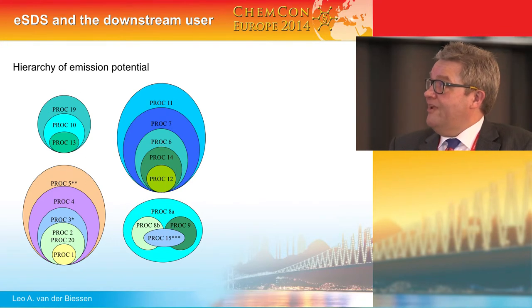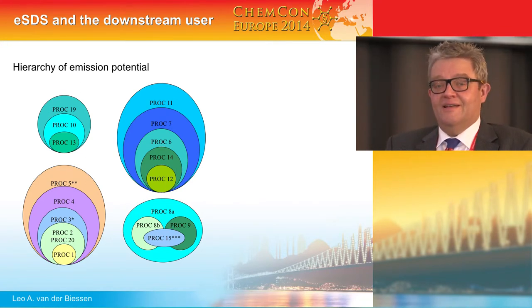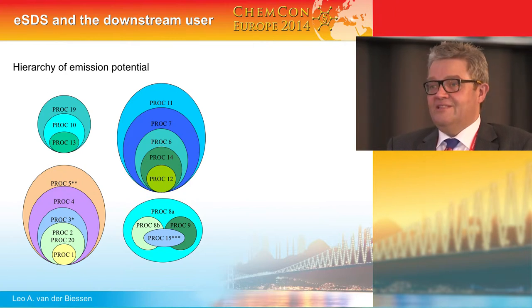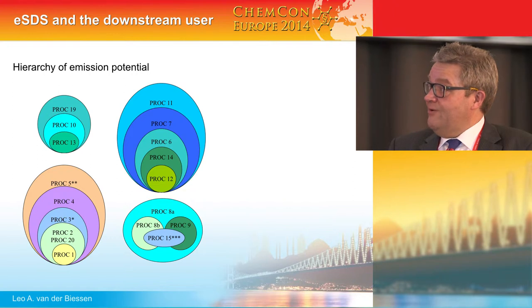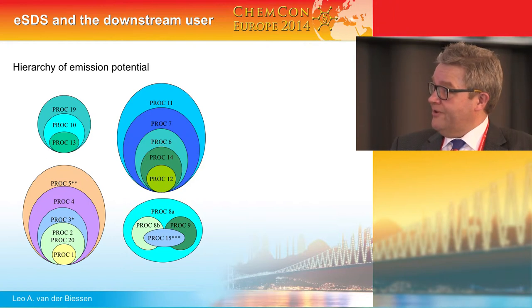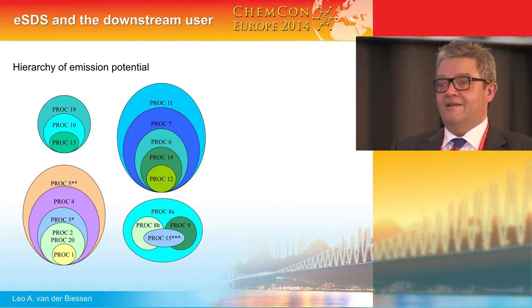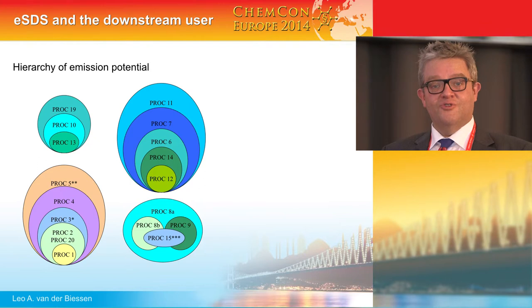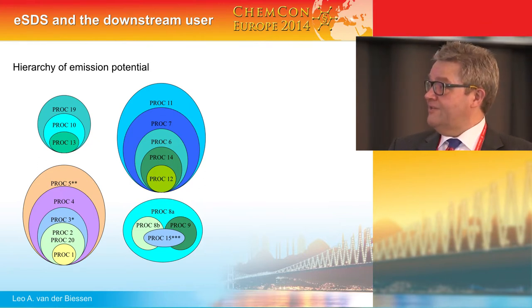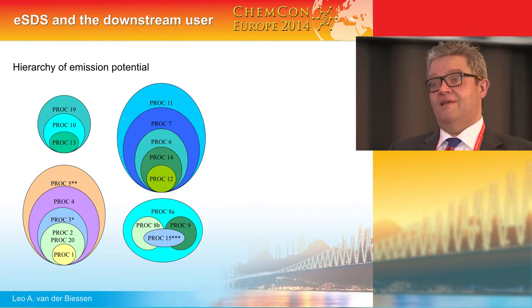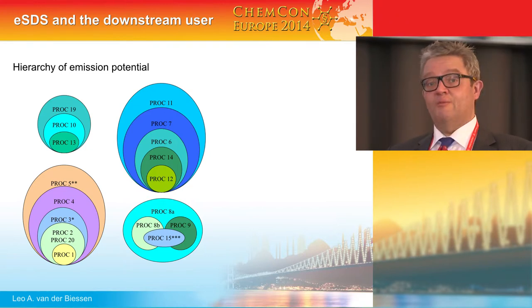One thing you may want to look out for is the hierarchy of emission potentials, because if you are very lucky, your supplier has already sieved out all the non-relevant information in your ESDS. For instance, if we look at production-related PROCs: if for any given use a PROC 5 is safe, and you are actually using a PROC 3, then you don't need to look at the actual conditions listed on PROC 3, because PROC 5 is safe and your operational conditions and risk management measures are more stringent.